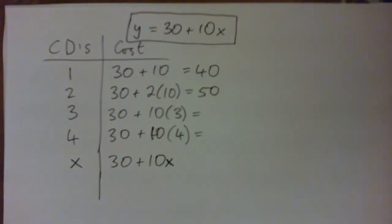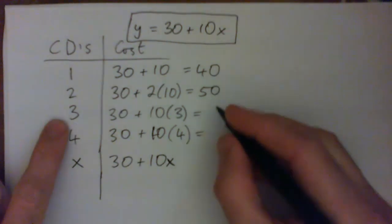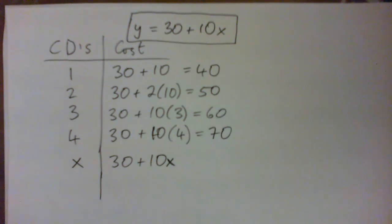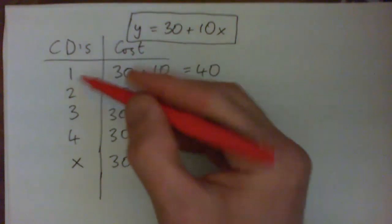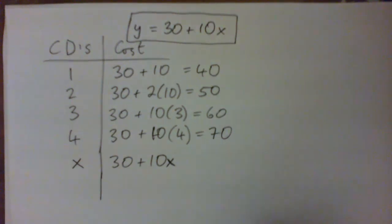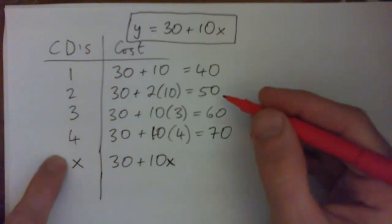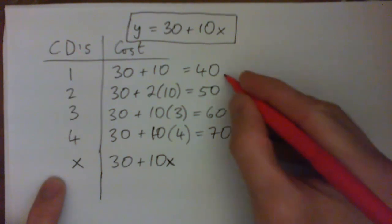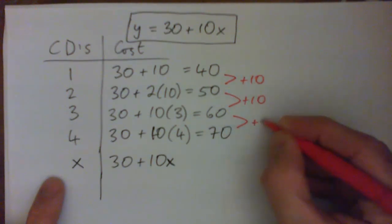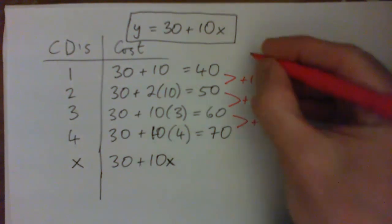Yep. And is this linear? So three CDs cost $60, and four CDs cost $70. And by the way everybody, I just made up these numbers. You guys can make up any numbers you want. But for the same increase on the inputs, it keeps going up by 10 here, doesn't it? And so that's what makes it a linear function.